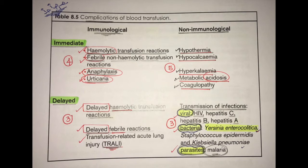For immediate immune reactions: febrile hemolytic reactions, febrile non-hemolytic reactions, urticarial reactions, and transfusion-related acute lung injury (TRALI). Delayed immune reactions include delayed febrile hemolytic reactions and delayed non-hemolytic reactions, as well as transfusion-related acute lung injury (TRALI) in its delayed form.